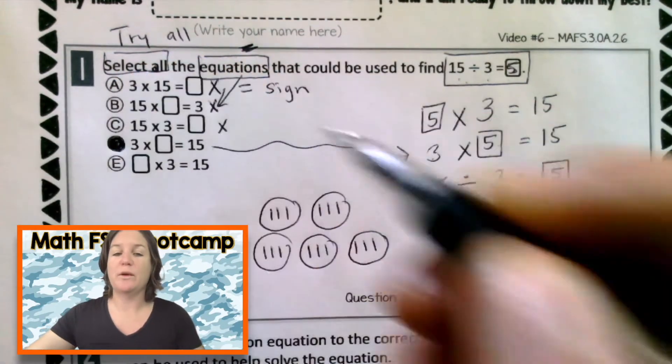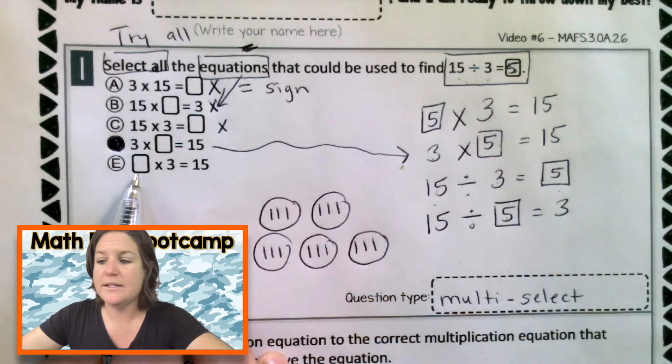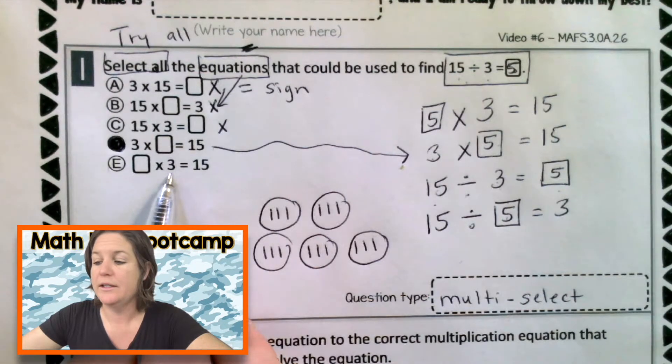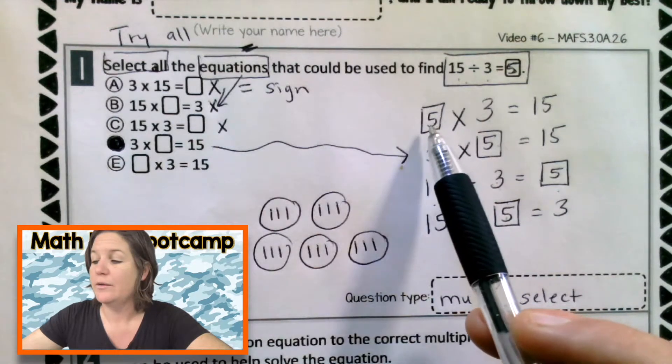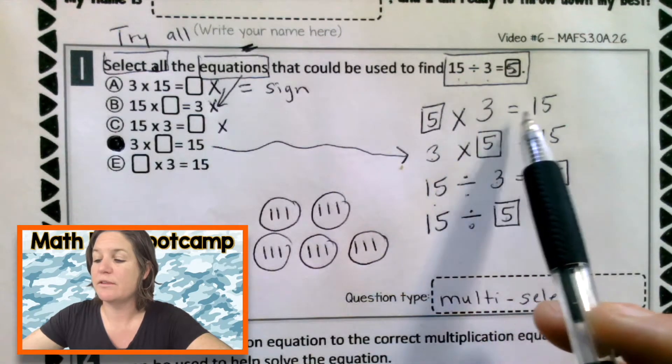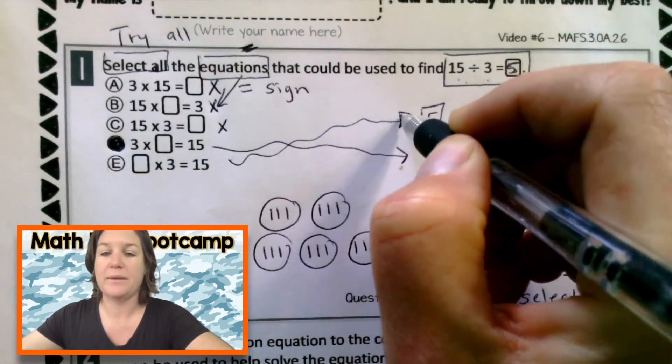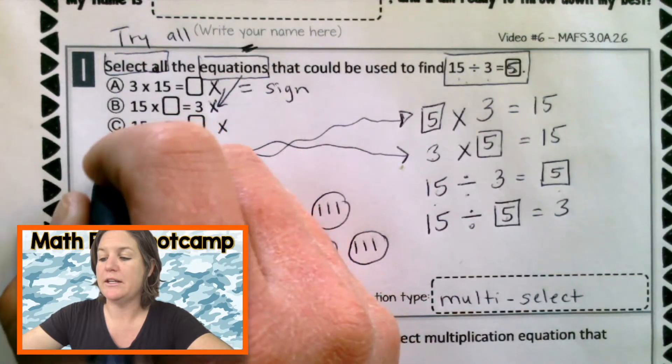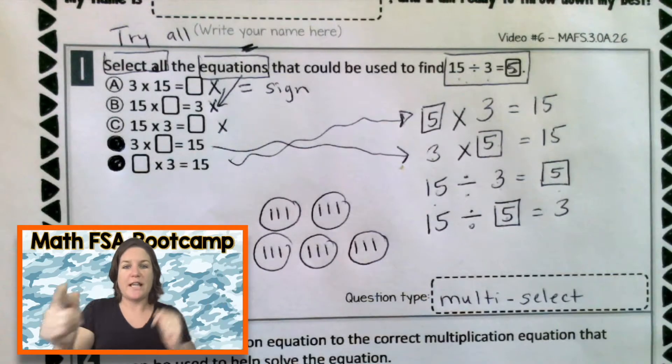And we definitely want to check out E, too. We try all of them. E says what value times 3 equals 15? That's just like this one. What times 3 equals 15? Well, 5 times 3 equals 15. Okay, there's our work. And I better not forget to bubble an E as well. Make sure you mark both answers in. Just like that.